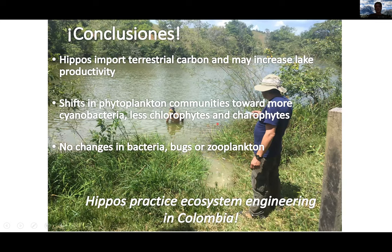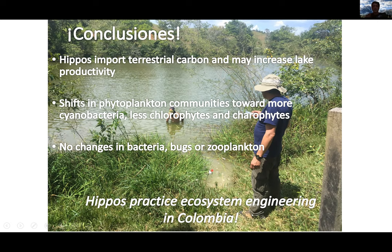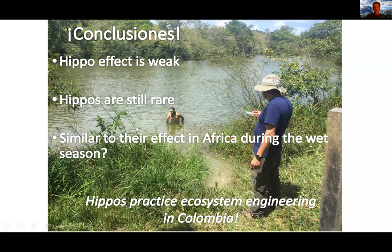The important results: hippos import terrestrial carbon and may increase lake productivity. We saw shifts in phytoplankton communities towards more cyanobacteria and less of other algal groups. We didn't see changes in bacteria, invertebrates, or zooplankton. This all suggests that hippos are ecosystem engineers in Colombia much as they are in Africa — perhaps not all that surprising. Notably, the hippo effect is relatively weak — the difference between hippo and no-hippo lakes is not very dramatic, which is similar to what other studies have seen in Africa during the wet season when hippos are not very concentrated.